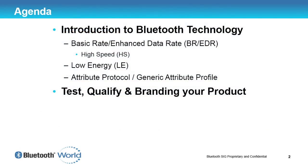First, we're going to have an introduction to Bluetooth technology covering three different areas: Bluetooth Basic Rate/Enhanced Data Rate (BR/EDR), something called High Speed, and the new technology known as Bluetooth Smart — or within the technical community, Bluetooth Low Energy. The last topic will be Attribute Protocol and Generic Attribute Profile. After that, I'll look at how you test, qualify, and brand your products.